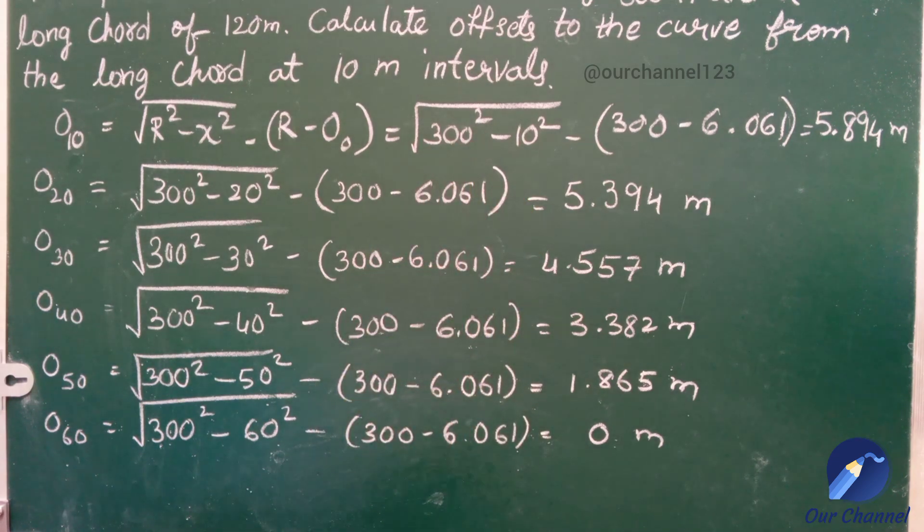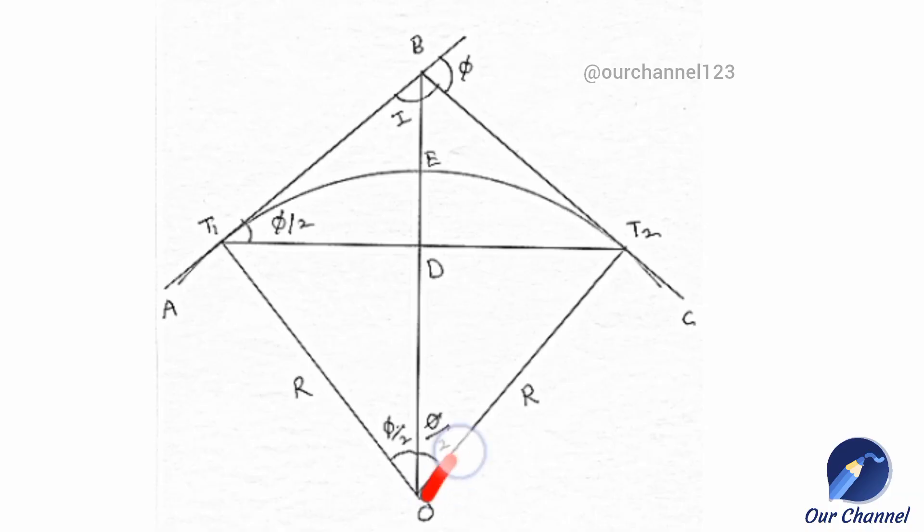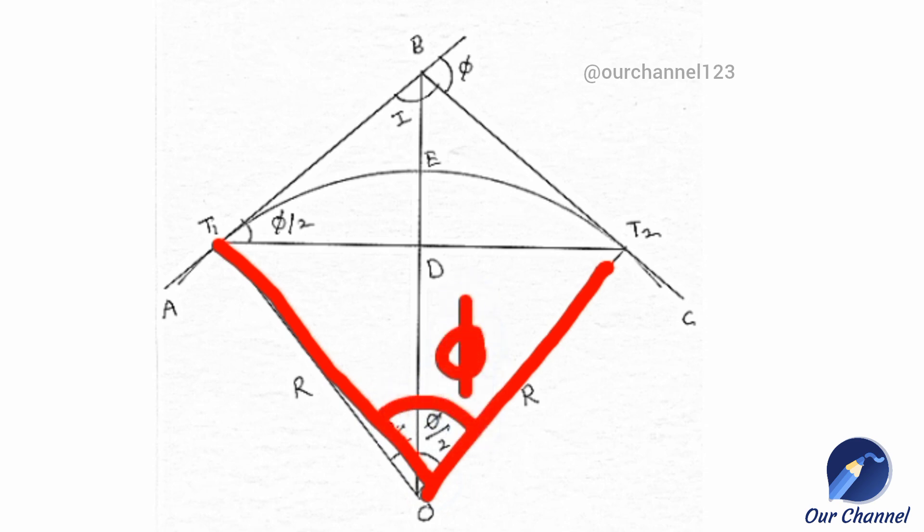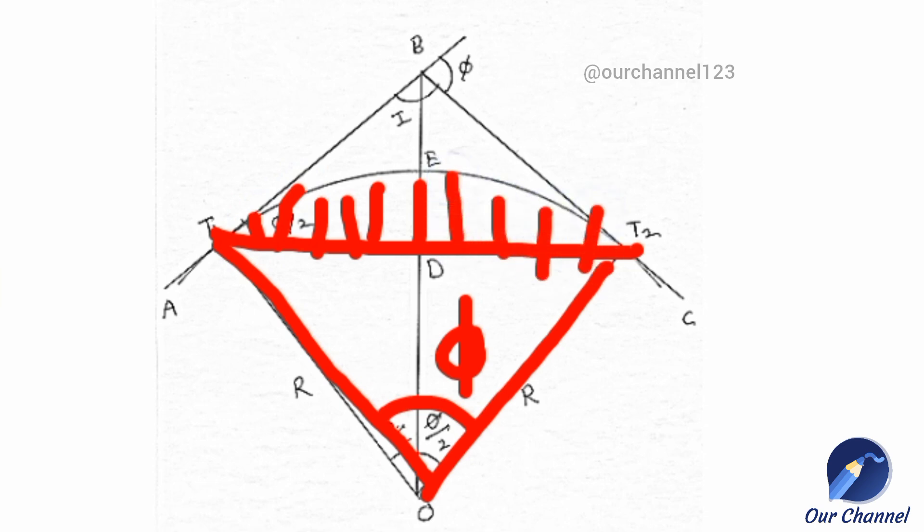We will get the final O₆₀ value as 0. For the remaining half chord we can use the same values and we can set out a simple circular curve. We know the value of the radius and deflection angle, length of the long chord with the calculated mid-ordinate value and offsets at 10 meter intervals. We can set out the simple circular curve.